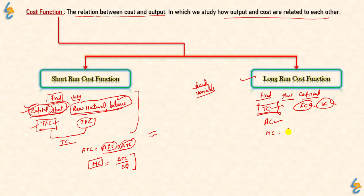The same applies in the long run: marginal cost equals change in total cost upon change in output. So in the long run, we talk about total cost, average cost, and marginal cost. In the last video, we talked about total cost, variable cost, and fixed cost.